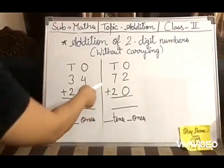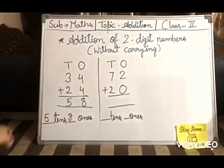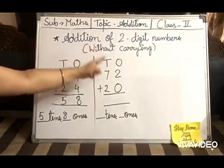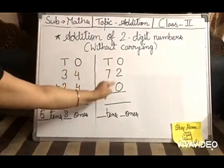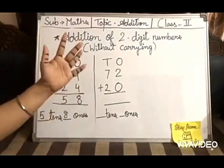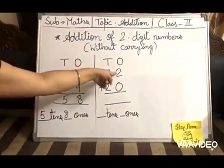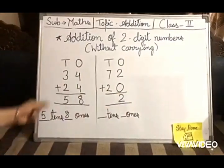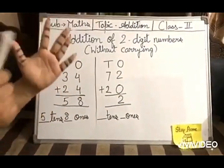So 34 plus 24 equals 58 - five tens and eight ones. Now we will see one more example: 72 plus 20. But you all know we always start with ones, so two ones plus zero ones.